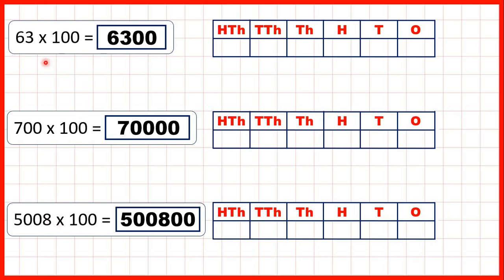But to see why it works, let's think back to this first question. We had 63, and we needed to multiply by 100. But remember, multiplying by 100 is the same as multiplying by 10, and then by 10 again, and we know that when we multiply by 10, digits move one place to the left. So if we're multiplying by 100, that's like multiplying by 10 twice, and that's why the digits move two places to the left.